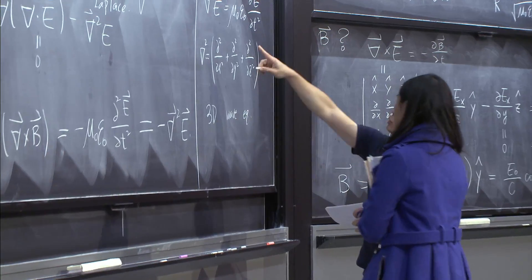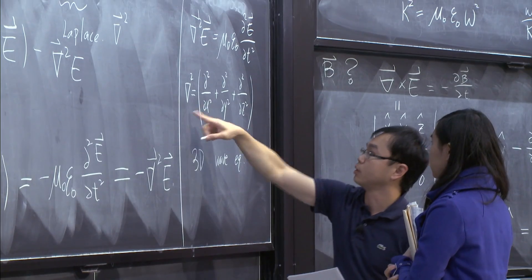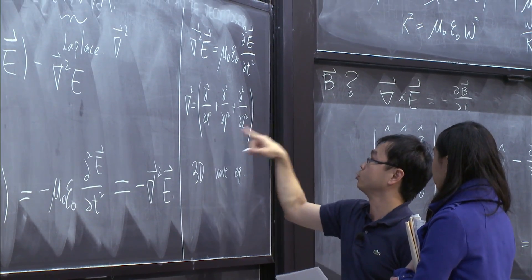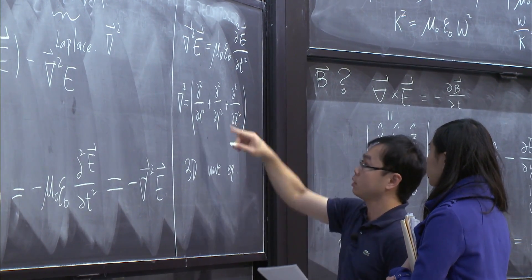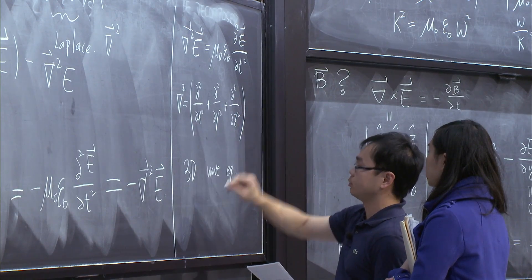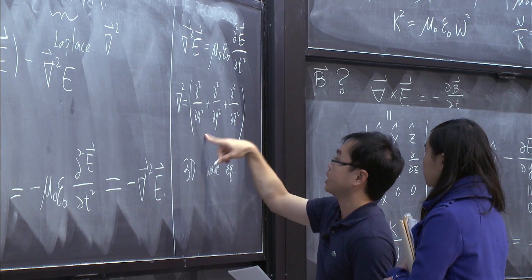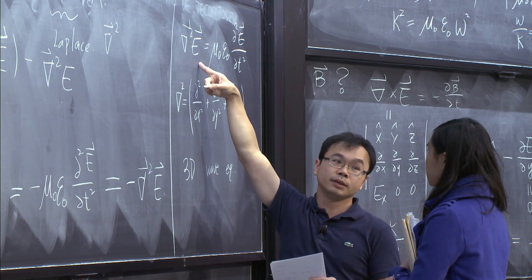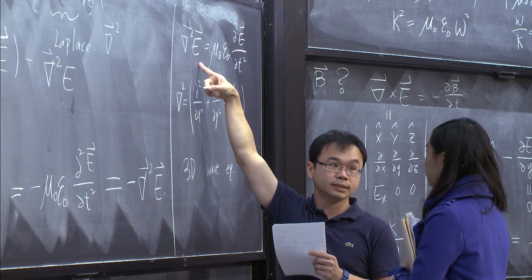Here you have del squared E. And the del squared — you have one, two, three terms, three operators. And if you write everything explicitly, this operator is going to be operating on Ex, Ey, and Ez. And we can actually solve them during the class.